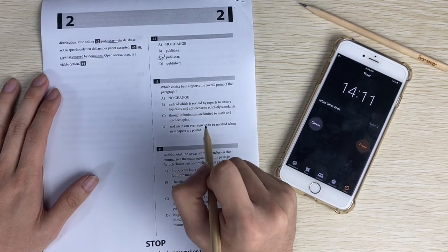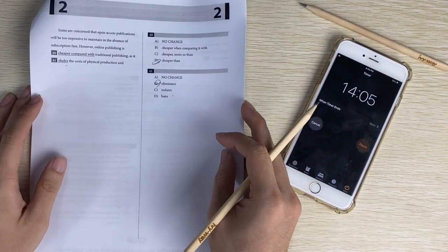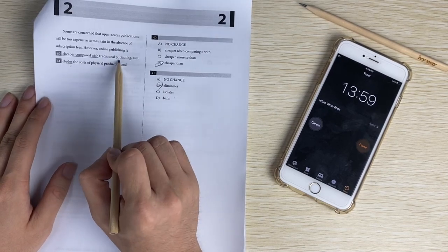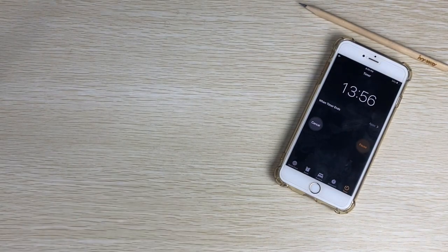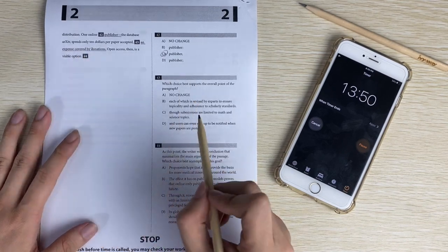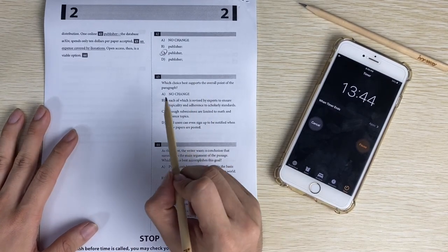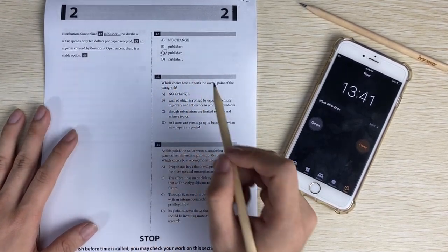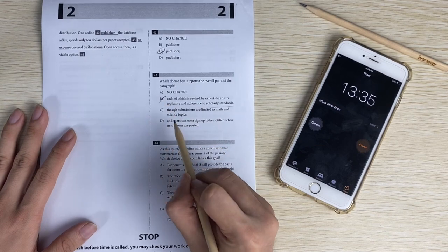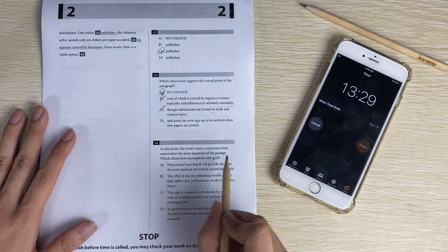Next question, overall point of the paragraph. So go back to the paragraph again. Here, some are concerned that open access are too expensive to maintain, but it's cheaper than traditional one. And they spend only ten dollars, so that's not a lot of money. Then here, an expense covered by donations. Might be right because it's covered, so money is not a problem. Each of each is right. Not about standards, submission, not the subjects. User can notify. The answer is A.